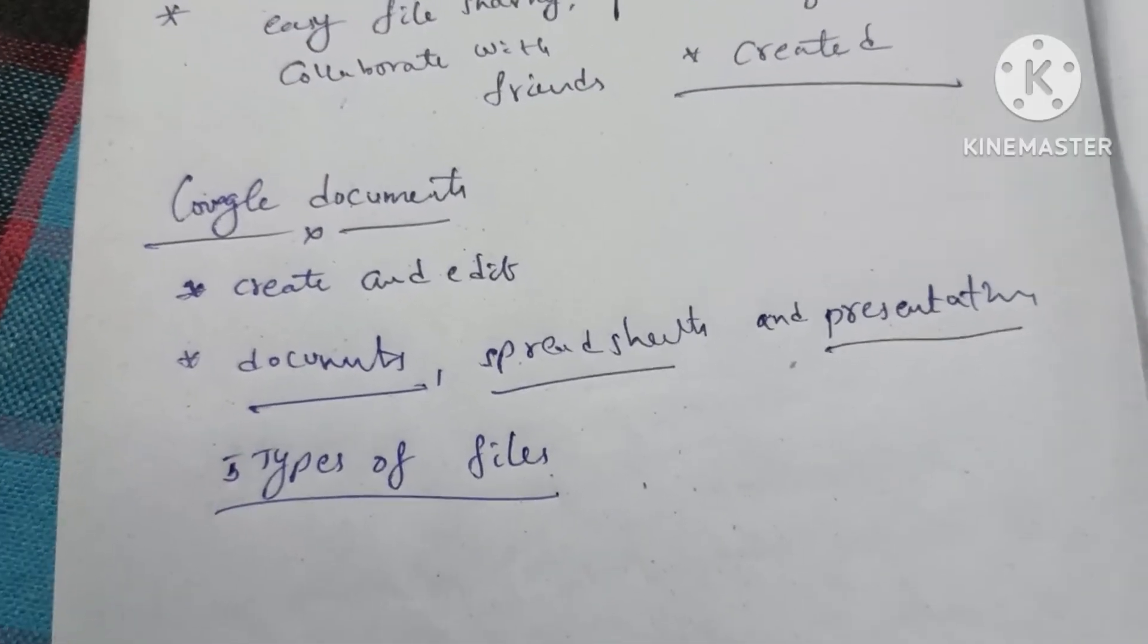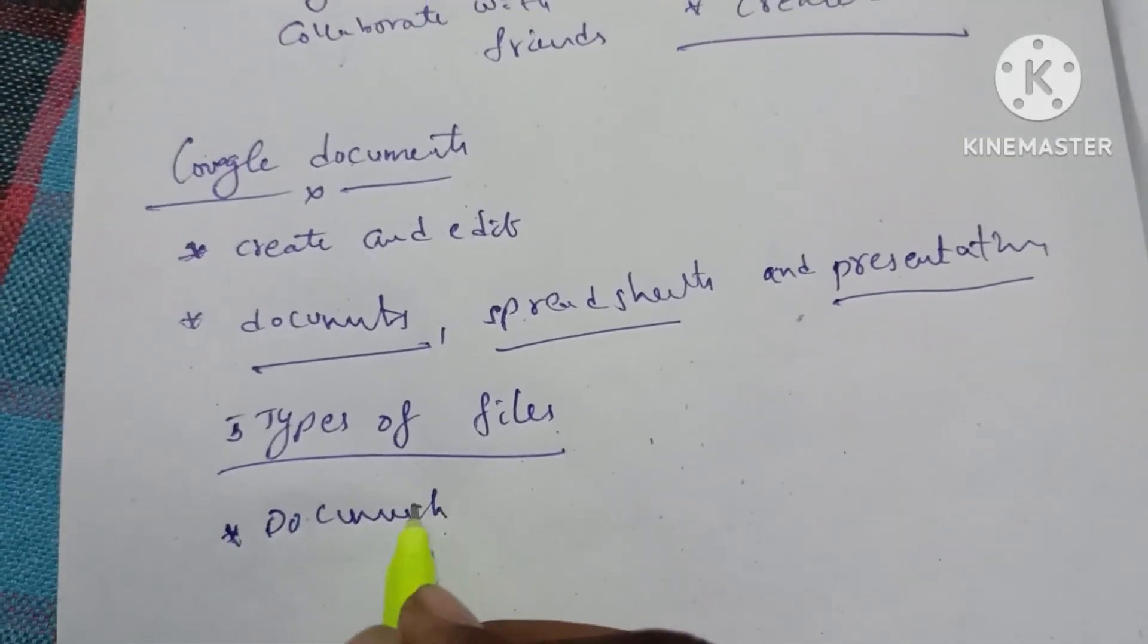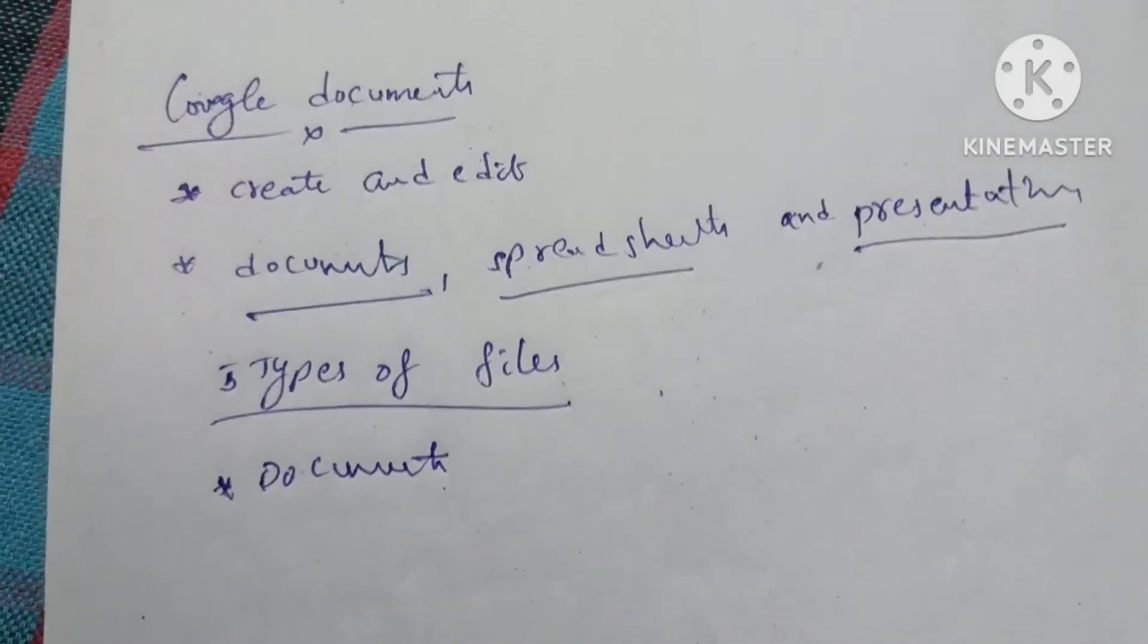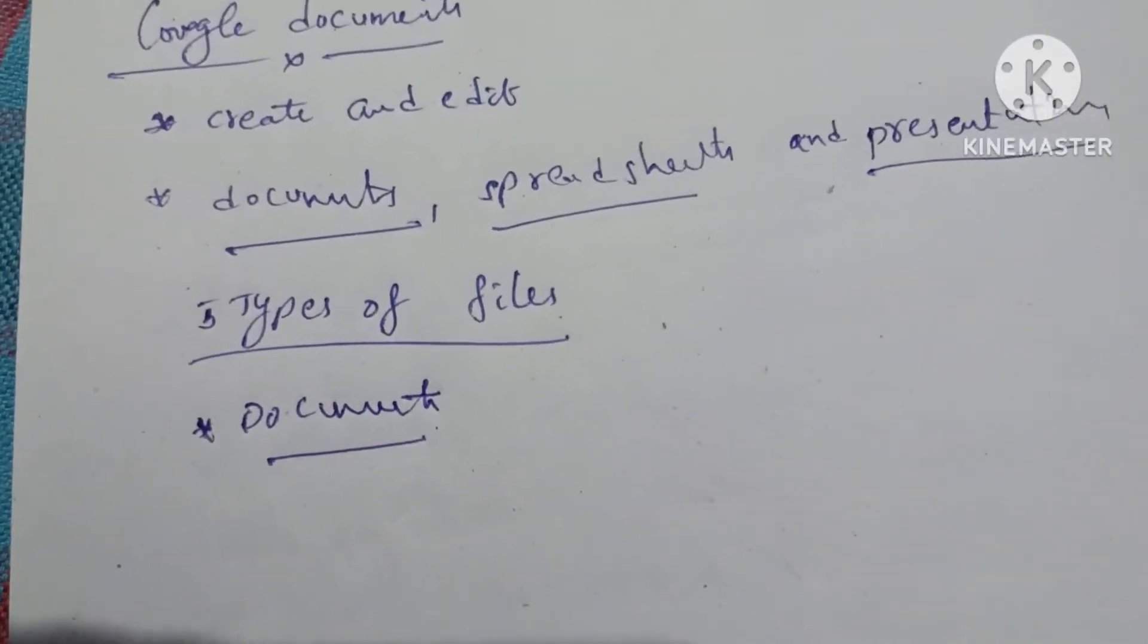First, we have documents. Documents are for text, like letters. You can also create PDFs from these documents.